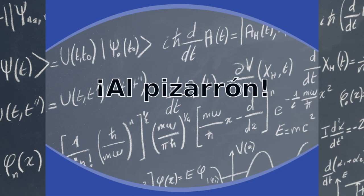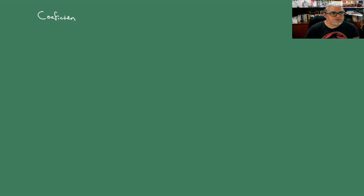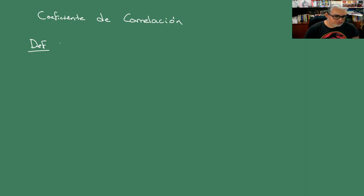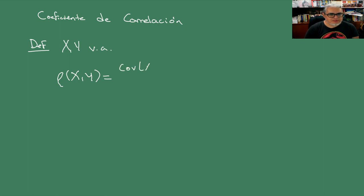Continuamos. Entonces vamos a hablar del coeficiente de correlación. ¿Cómo lo definimos? Tenemos dos variables aleatorias y vamos a definir el coeficiente de correlación ρ de esas dos como la covarianza de X e Y sobre la raíz del producto de las varianzas.